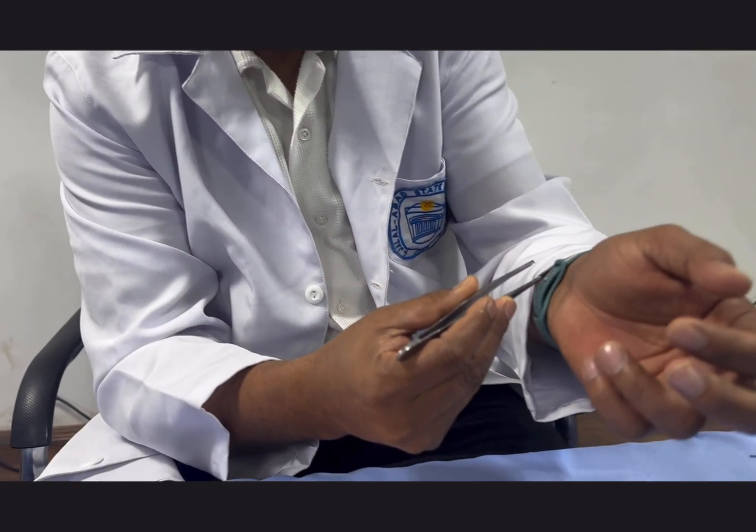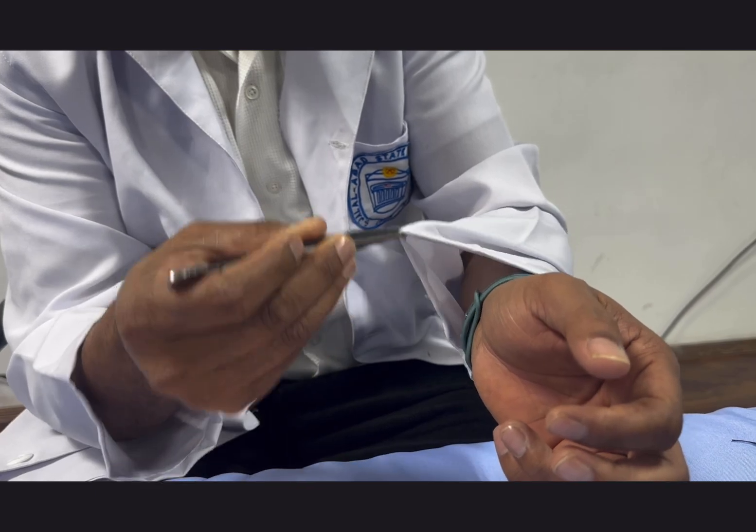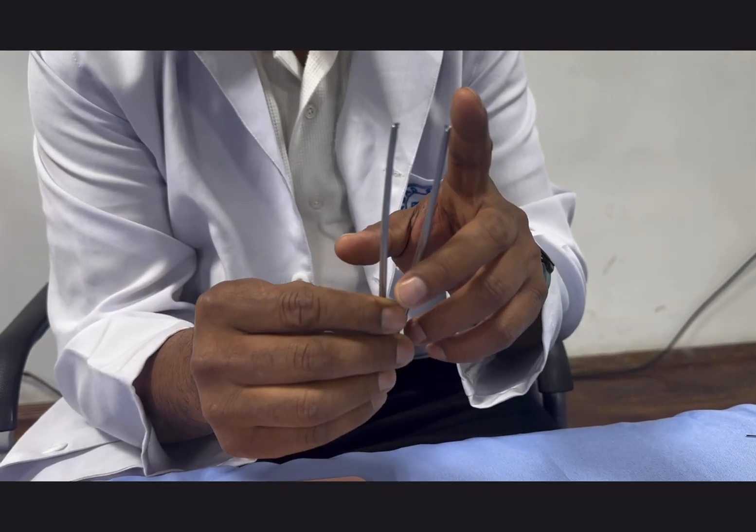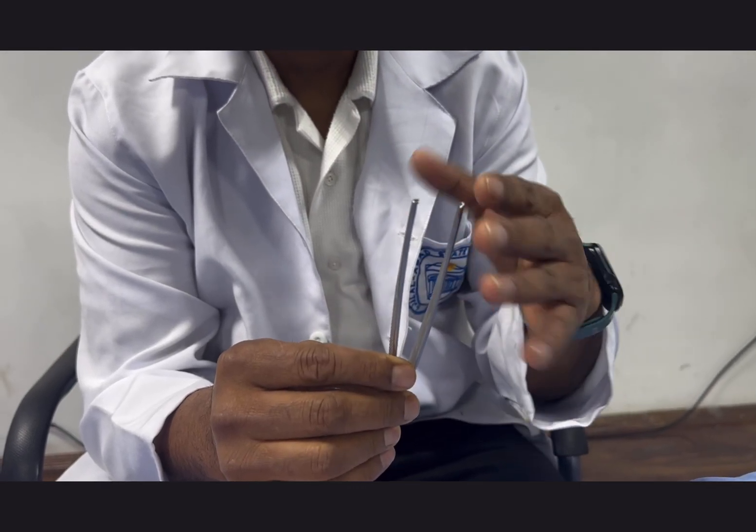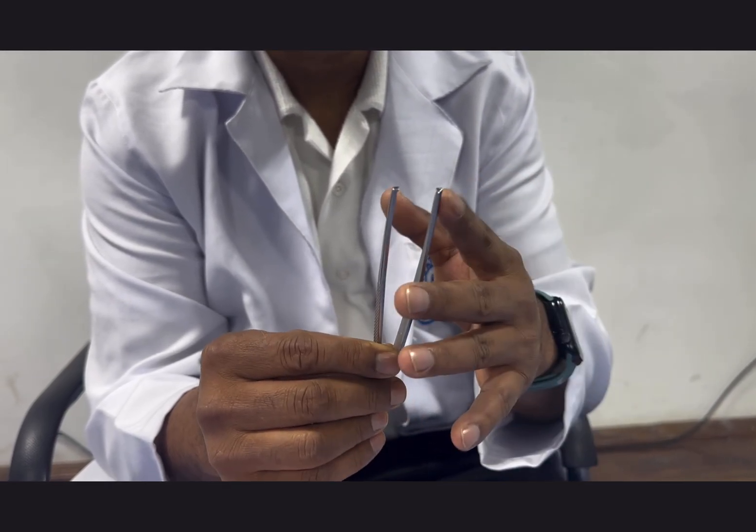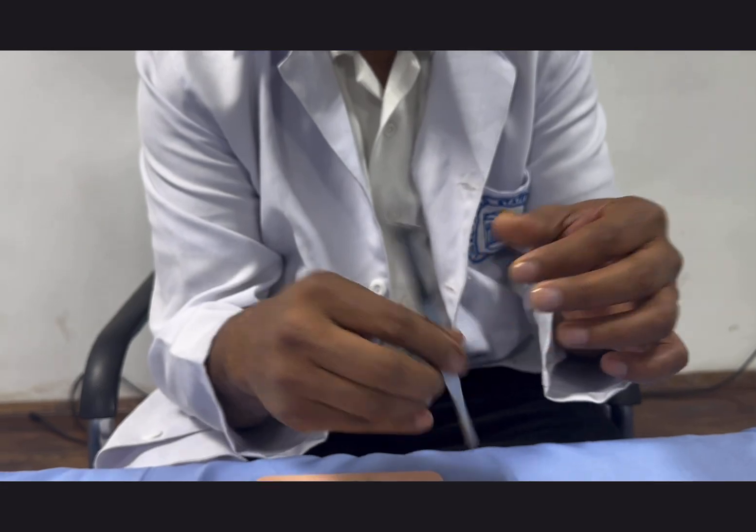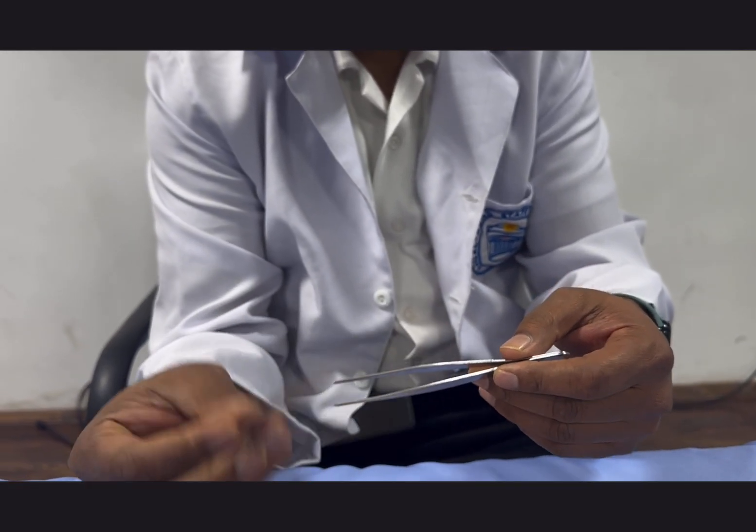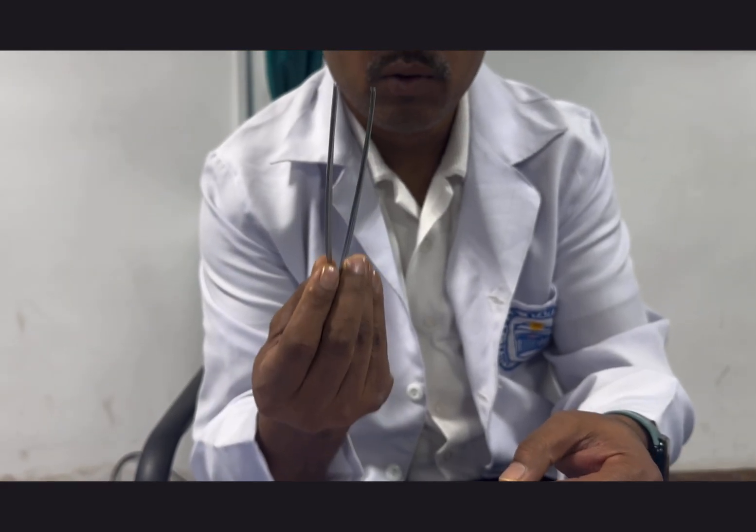The tooth one is used to hold tougher tissue like skin. If you hold the skin by the tooth it will not slip away. It's used outside the body but you cannot use this inside because it will puncture the intestine or maybe the muscles or any other organ. Inside, better to use plain one so you can hold it and there is no trauma. Outside like skin, hold it by the tooth tissue forcep.